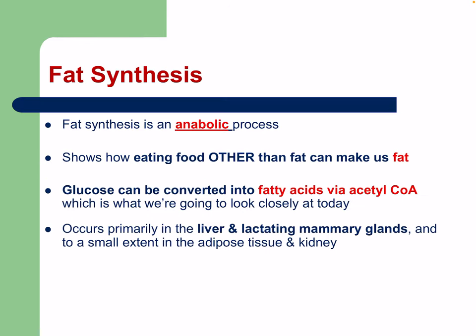Fat synthesis is an anabolic process. It shows how eating food other than fat can still make us fat. If we eat a lot of carbohydrates, fat is still synthesized. Excess macronutrients get converted into fat, so we don't have to eat fat to get fat. Glucose can be converted into fatty acids via acetyl-CoA.